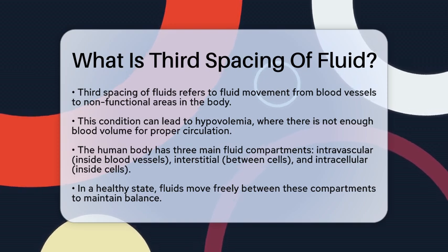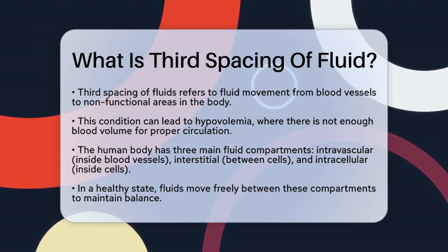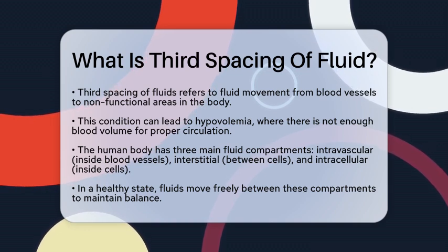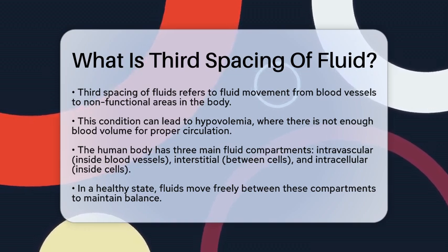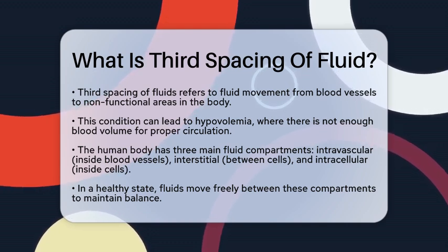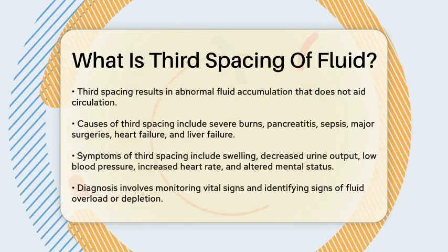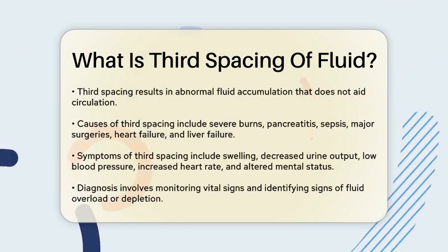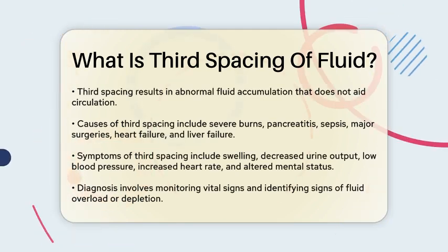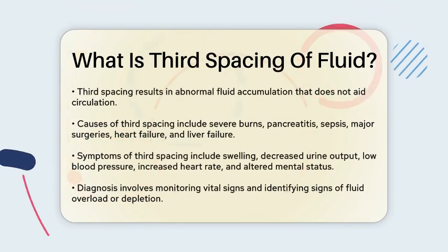Hypovolemia occurs when there is insufficient blood volume to maintain adequate blood flow to vital organs. To understand this better, let's look at the fluid compartments in the human body. We have three main compartments: the intravascular space, which is inside the blood vessels; the interstitial space, which is between cells; and the intracellular space, which is inside the cells. In a healthy state, fluids move freely between these compartments, helping to maintain balance.